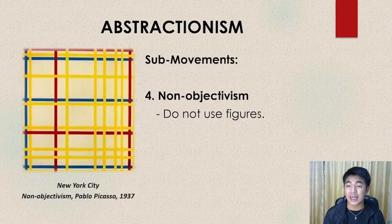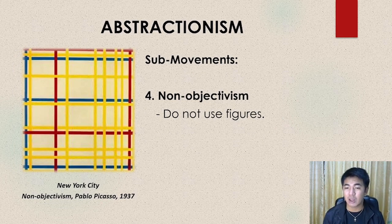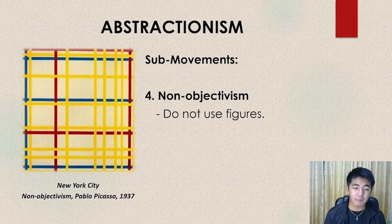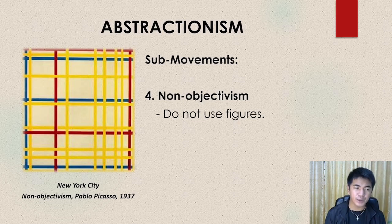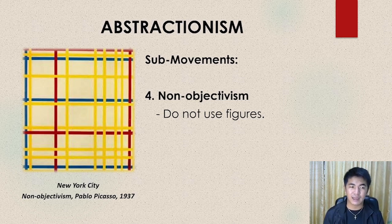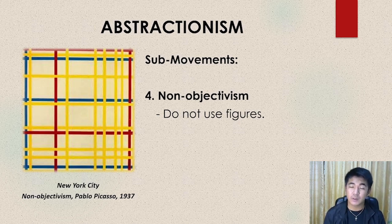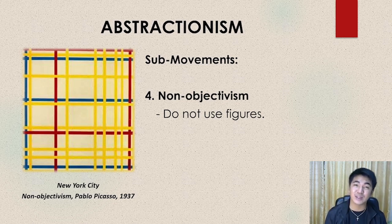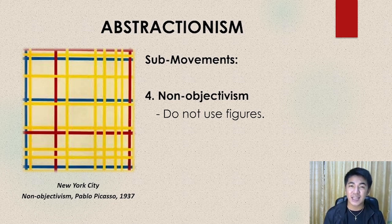For our next sub-movement, we have Non-Objectivism. It's right there in the name — Non-Objectivism. Non-objects are used. Looking at New York City by Pablo Picasso, he used only colors and lines, and also provided spaces. The interpretation could be intersections or streets in New York. That may be Picasso's interpretation here. So you see, you can make lines, checkered patterns, and say these are intersections in a place — name it after where you live — and you are already an artist.